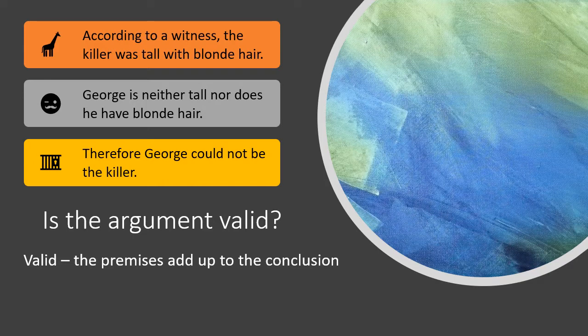The second statement is the negation of the first idea — George is neither tall nor does he have blonde hair. Going back to our four forms of logic, this is thinking from a contrapositive point of view: not B, therefore not A. George could not be the killer because he doesn't fit the description. This argument is valid because as long as those premises are true, the conclusion naturally follows.